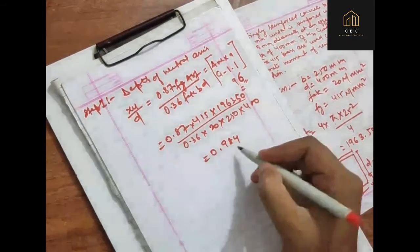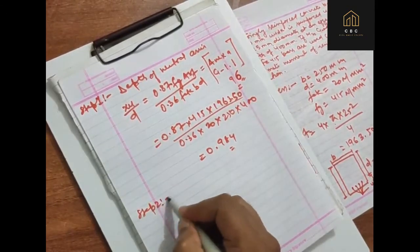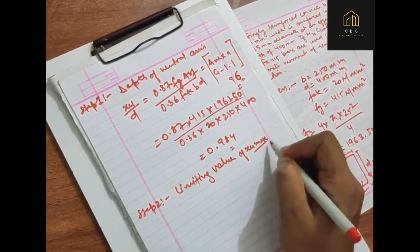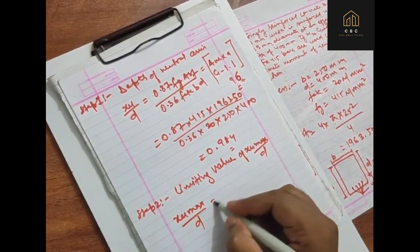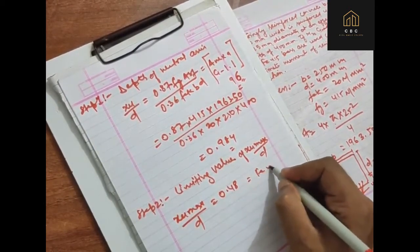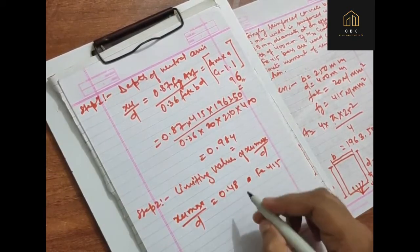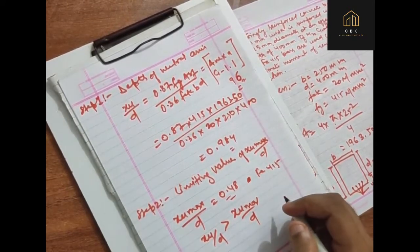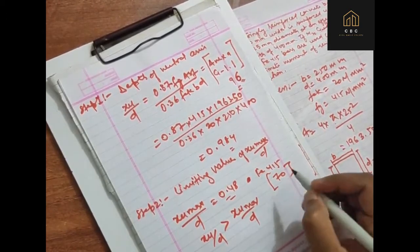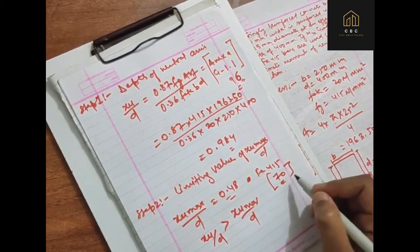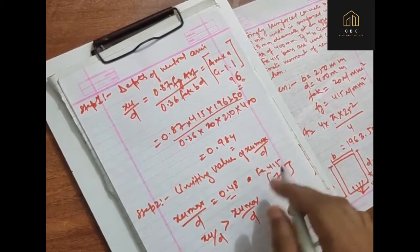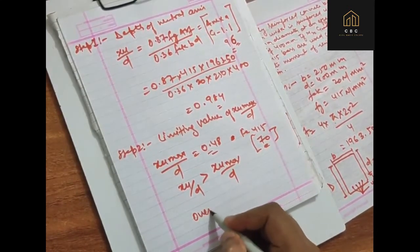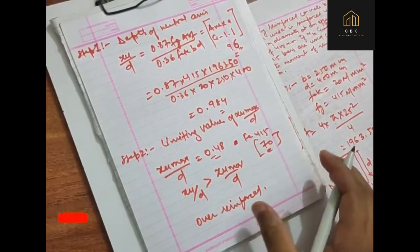Step number 2: limiting value of XU max by D. XU max by D equals 0.48 because FY 415 is being used. This value is on page number 17. Now XU by D is greater than XU max by D, so this will be over-reinforced.